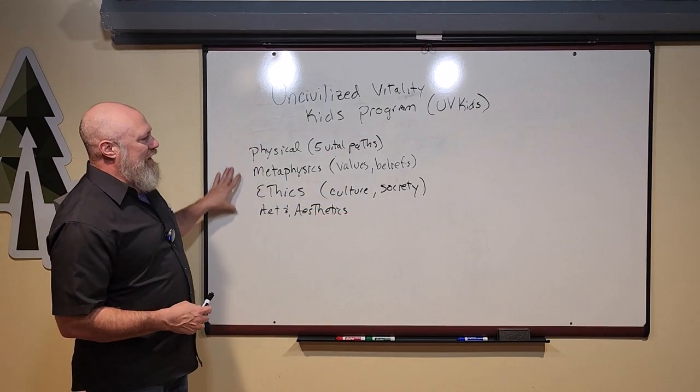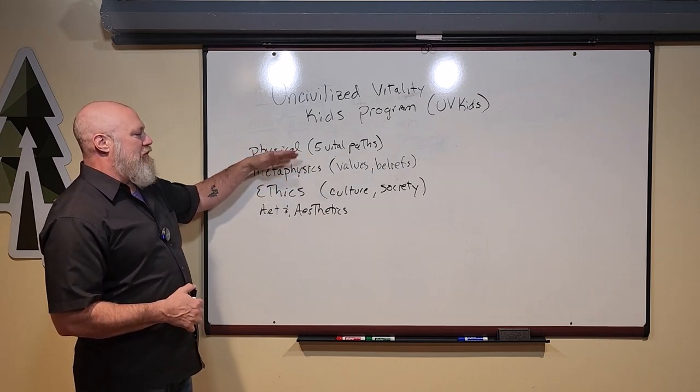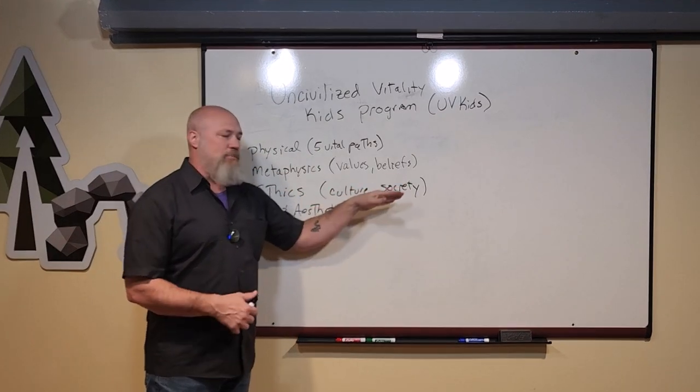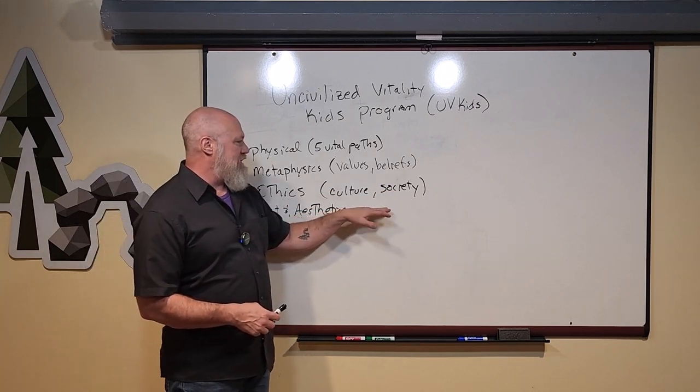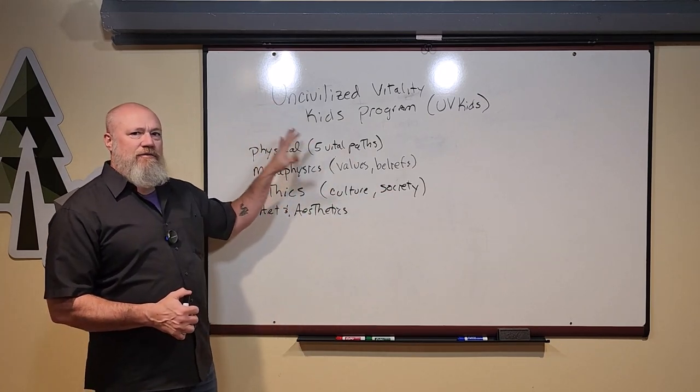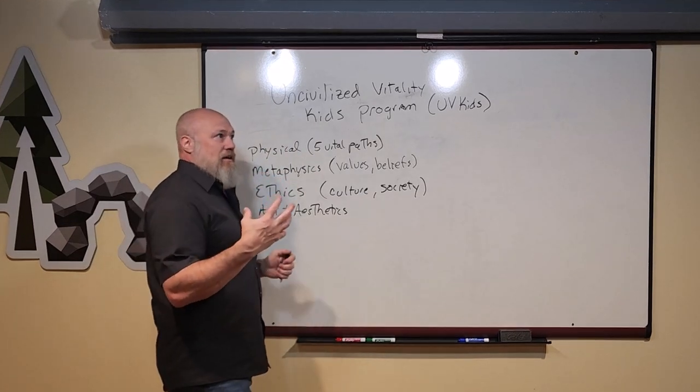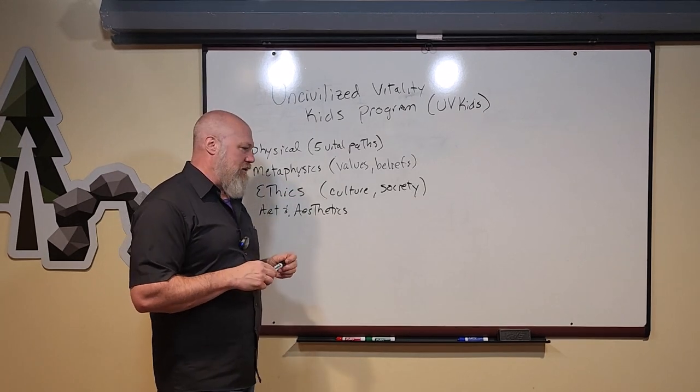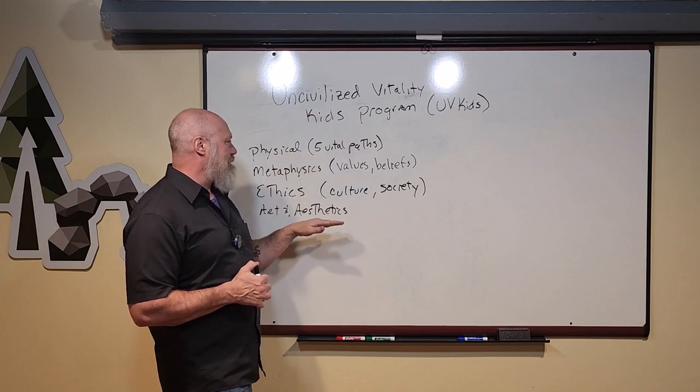Now these things kind of happen in the home at the family level, right? The five vital paths, physical education. What are your values and beliefs? What are your ethics? How do you fit into a culture and society? How do you support a well-functioning society? What is the meaning of beauty and truth and goodness? These things are all taught in solid family units. Obviously civilization has succeeded to a great degree by disrupting the family unit anymore, especially in modern times, but uncivilized vitality is going back to that because that is the basis of a functioning society.